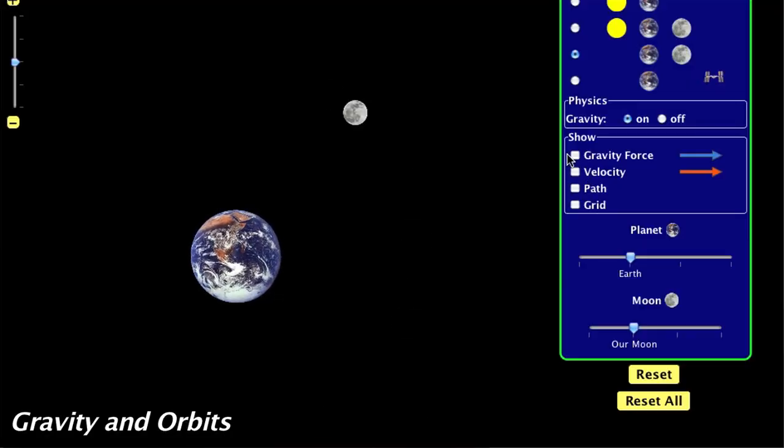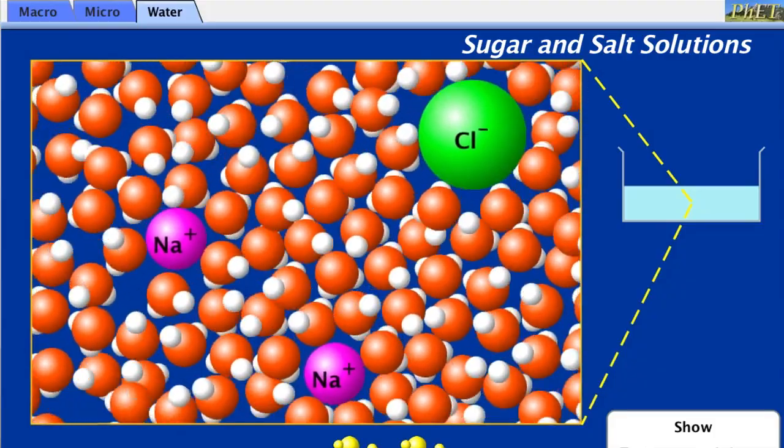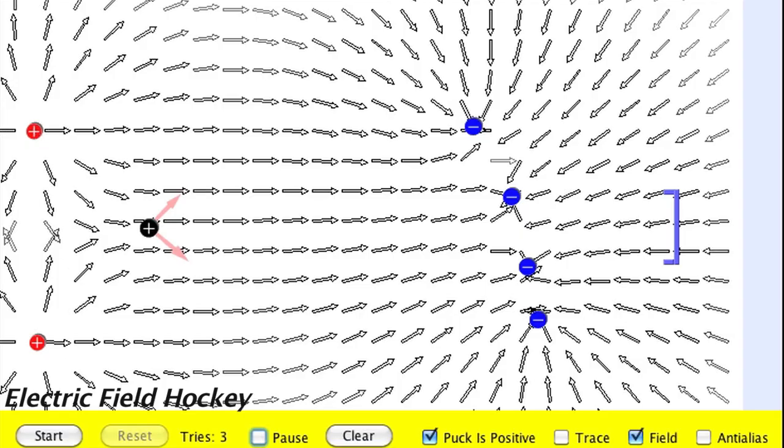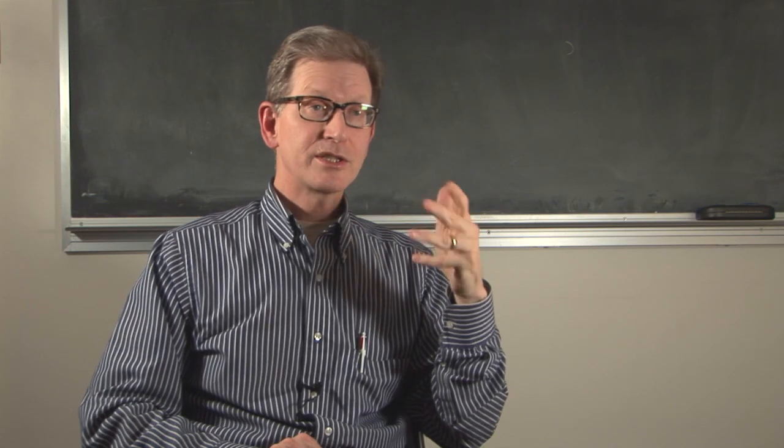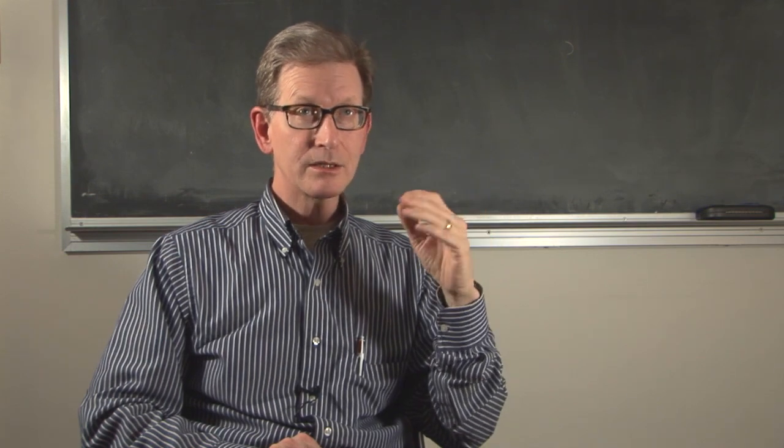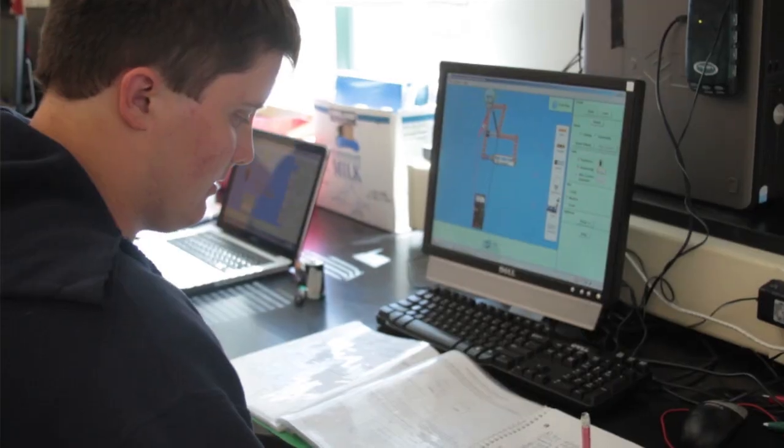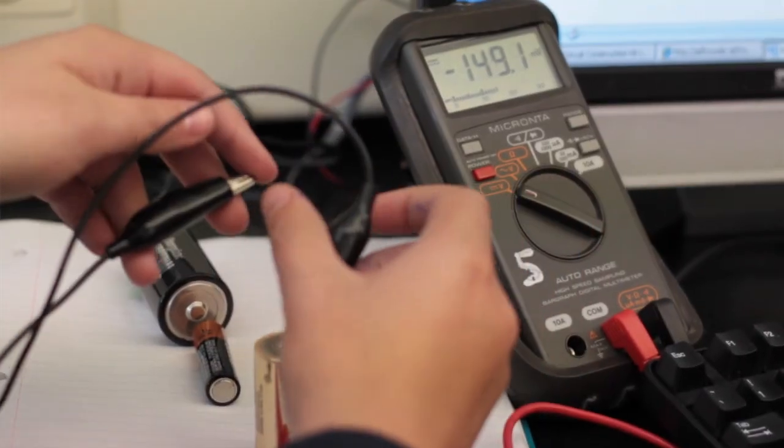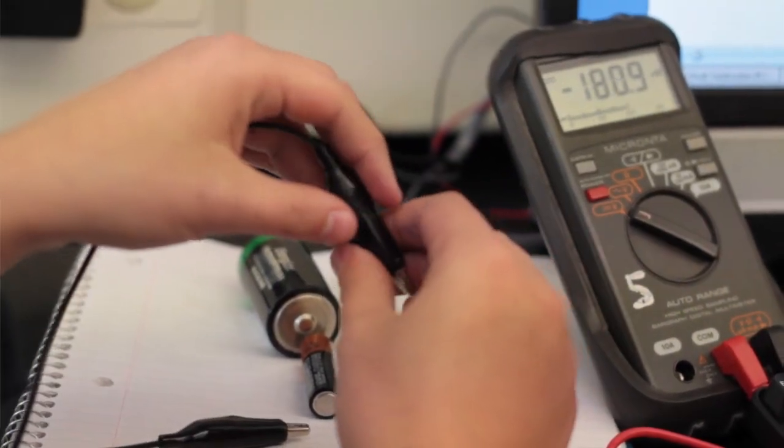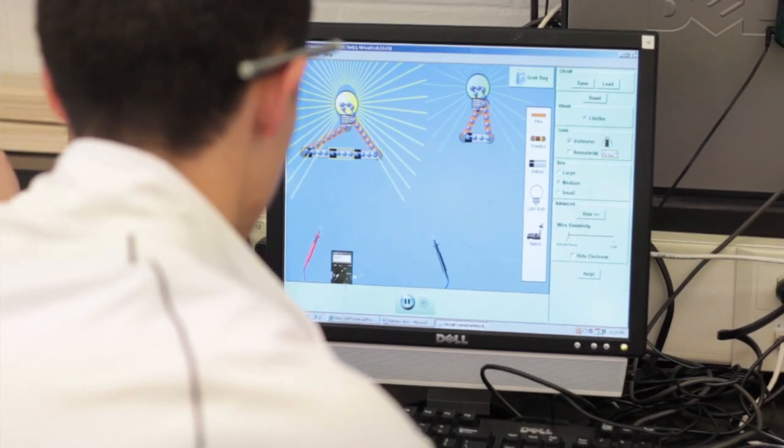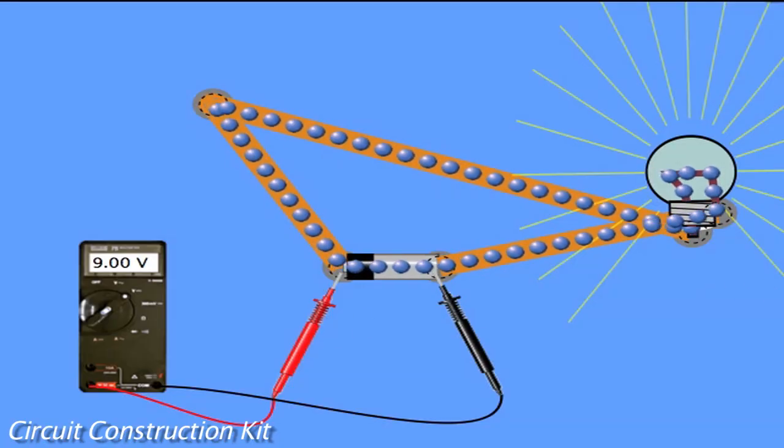There are other PhET sims that are making physics representations make more sense, like when you turn on the force arrows. Some of them are making the invisible visible, the charges, the electric field lines. In the case of questions about circuits, the whole point is to get the students having some intuitive understanding of how the electrons are flowing through the wires. In a real circuit, they can only infer that electrons are flowing through wires by the brightness of the bulbs, but in the PhET sims, they can see the electrons. It really helped me visualize it without having to do an actual experiment. I could see what was going on.